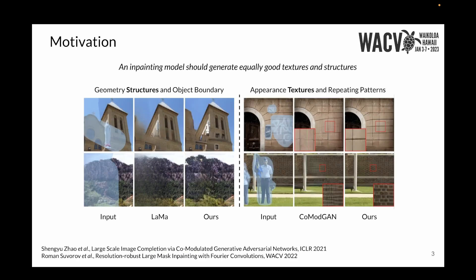An inpainting model should be able to generate equally good textures and structures at the same time. However, existing works like Lama generate fading out structures when the size of the hole gets bigger. Another state-of-the-art work, ComodGAN, fails at completing texture regions and generates various artifacts.